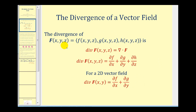The divergence of a vector field is equal to the dot product of the partial derivative operator and the vector field F, which gives us the partial derivative of f with respect to x, plus the partial derivative of g with respect to y, plus the partial derivative of h with respect to z. If F is in R2, a two-dimensional vector field, then we have the partial of f with respect to x plus the partial derivative of g with respect to y.